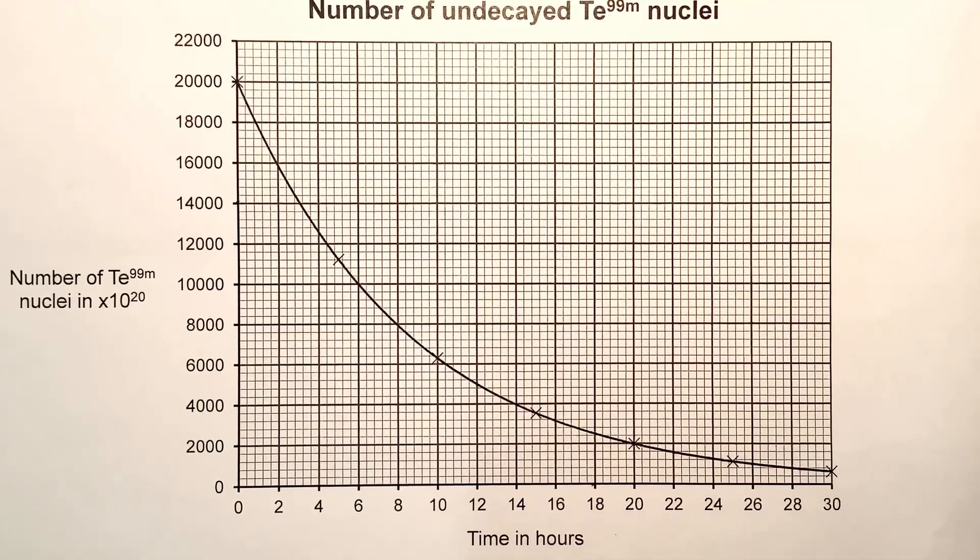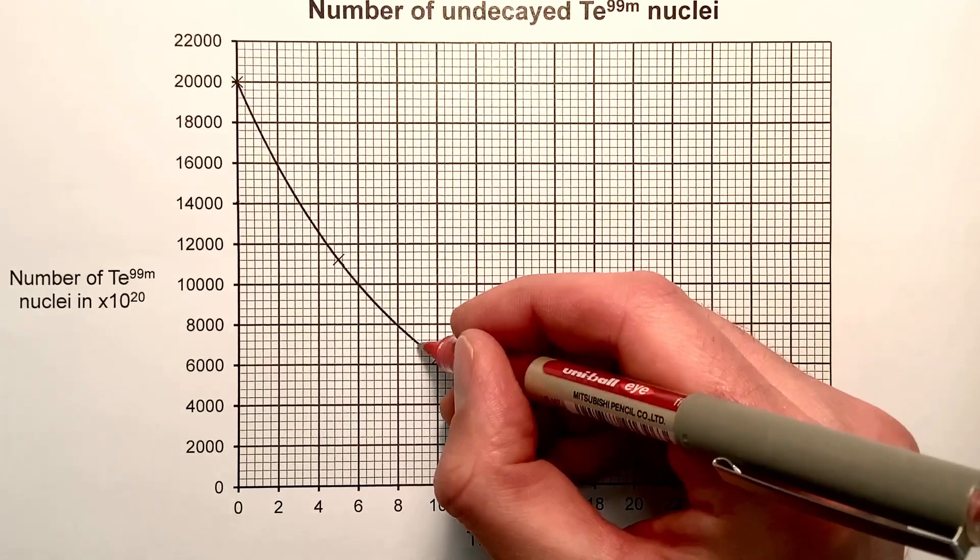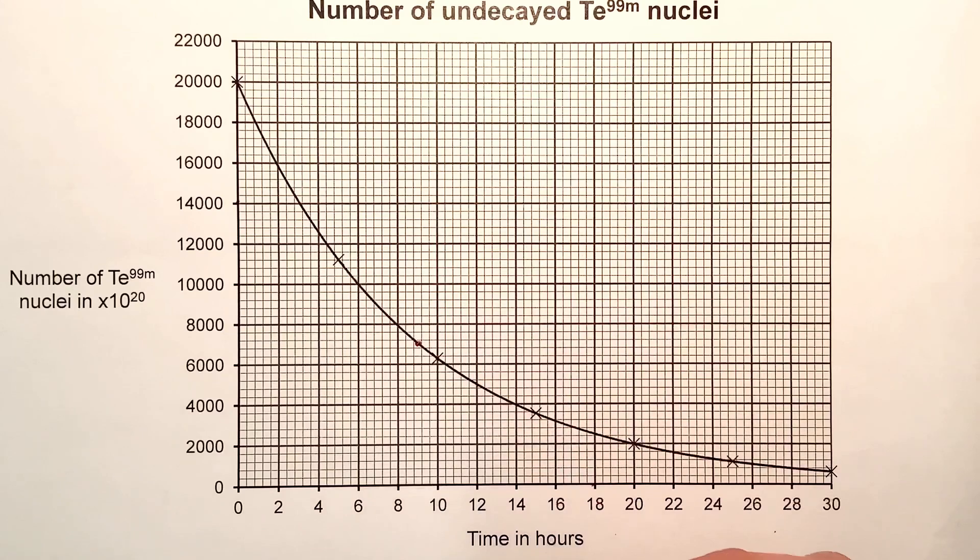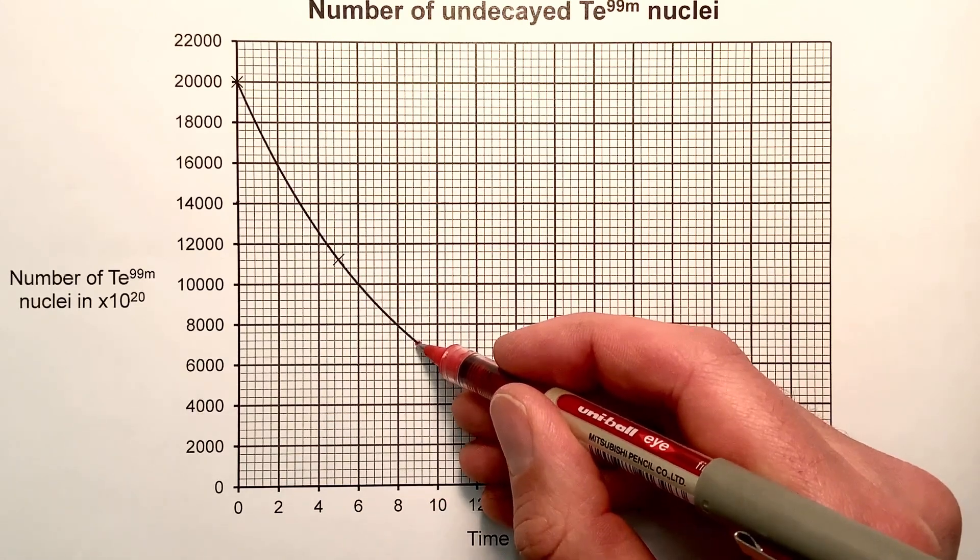Let's have a look in this video at how we can find the gradient of the graph after 9 hours. So it's a good idea to put a little spot at 9 hours, going up from halfway between 8 and 10.